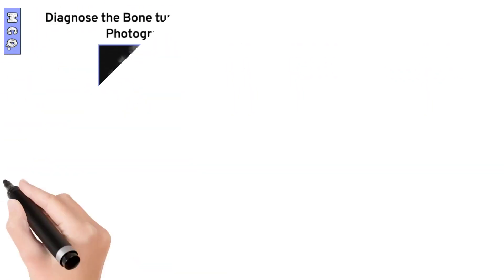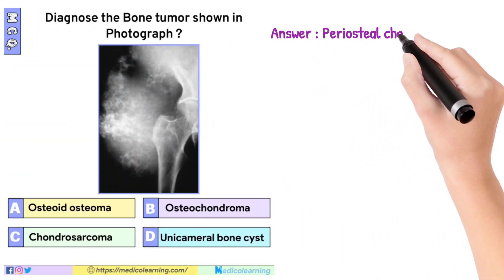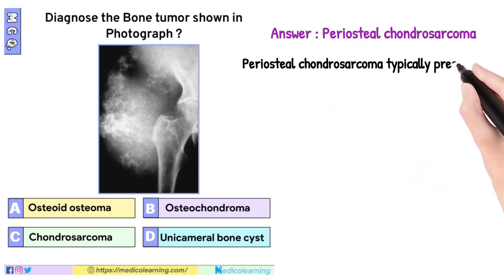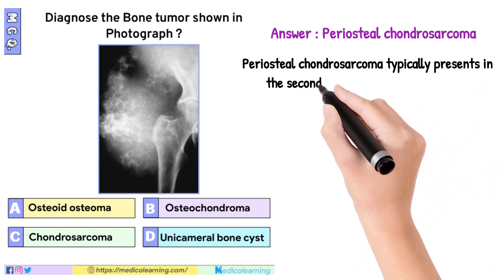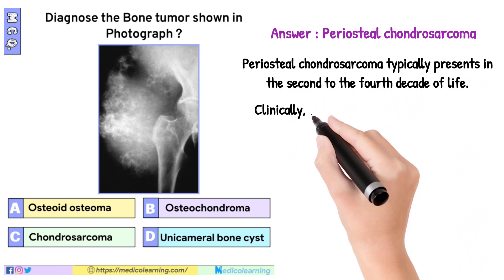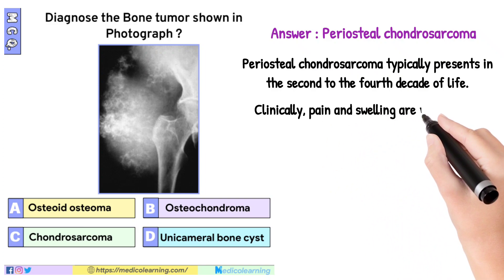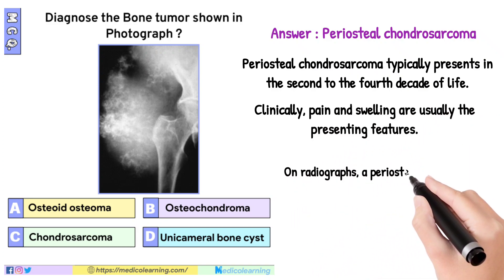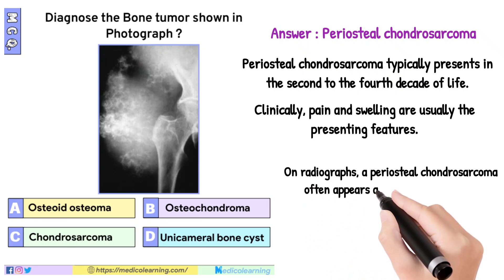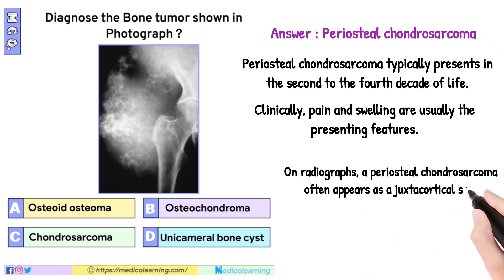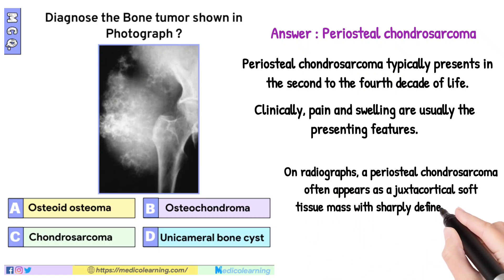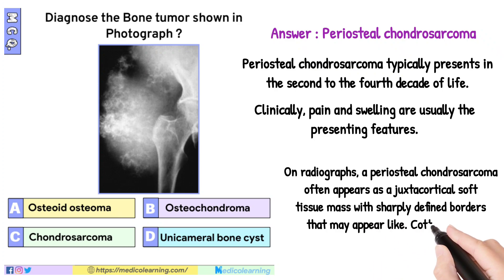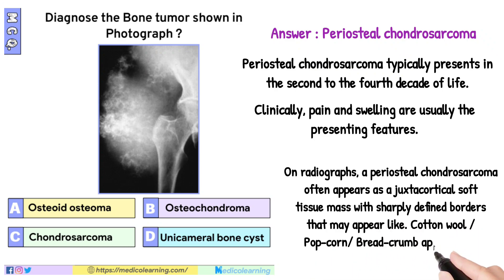In this question the answer is Periosteal chondrosarcoma. Periosteal chondrosarcoma typically presents in the second to the fourth decade of life. Clinically, pain and swelling are usually the presenting features. On radiographs, it often appears as a juxtacortical soft tissue mass with sharply defined borders that may appear like cotton wool, popcorn, or breadcrumb appearance.